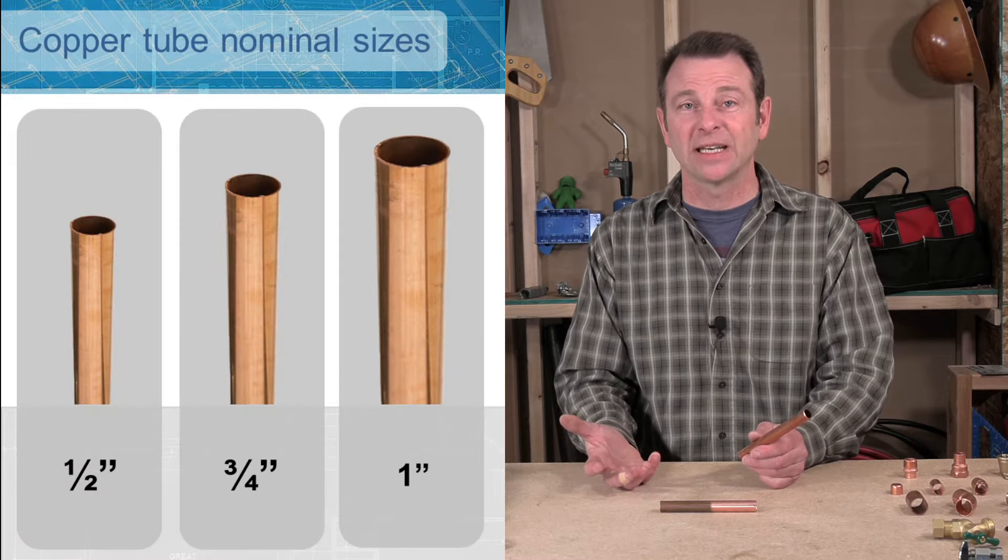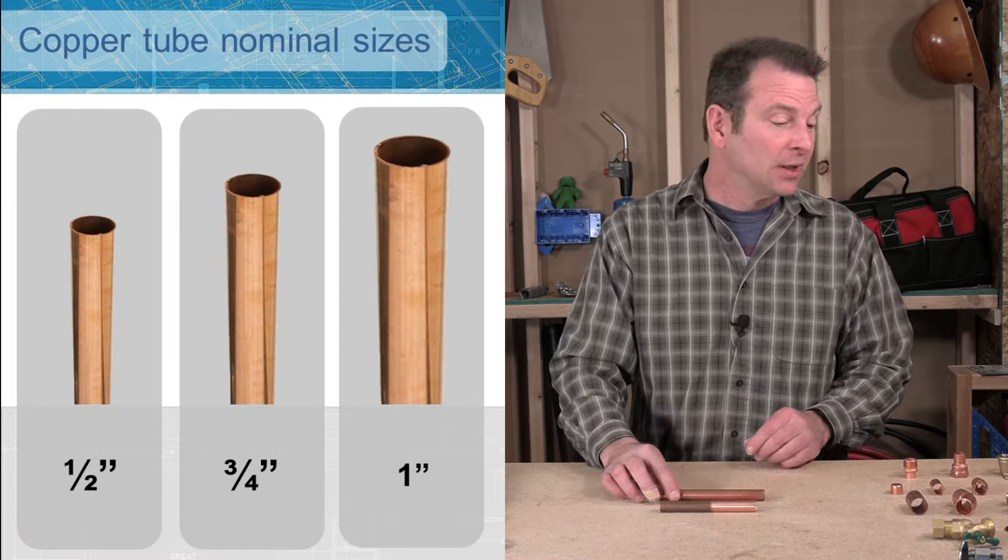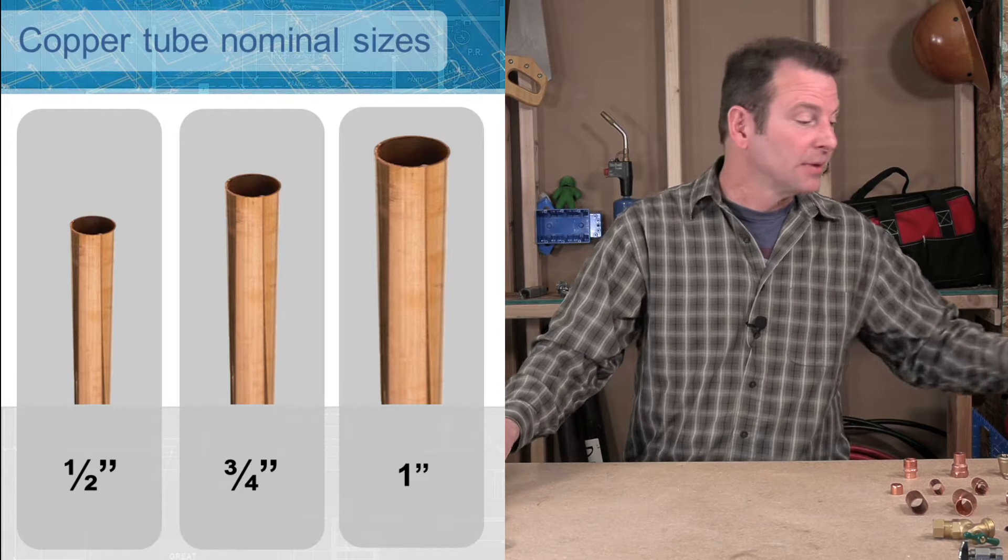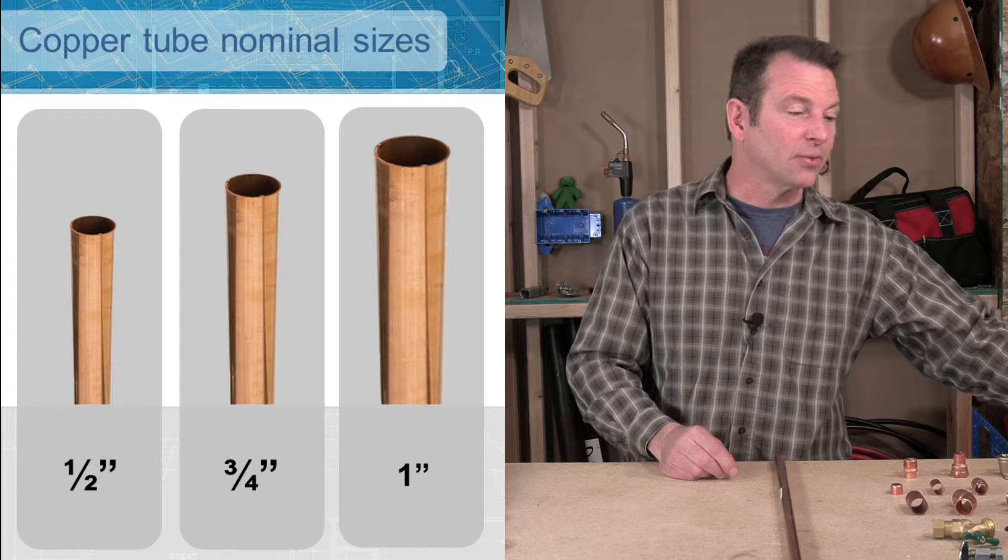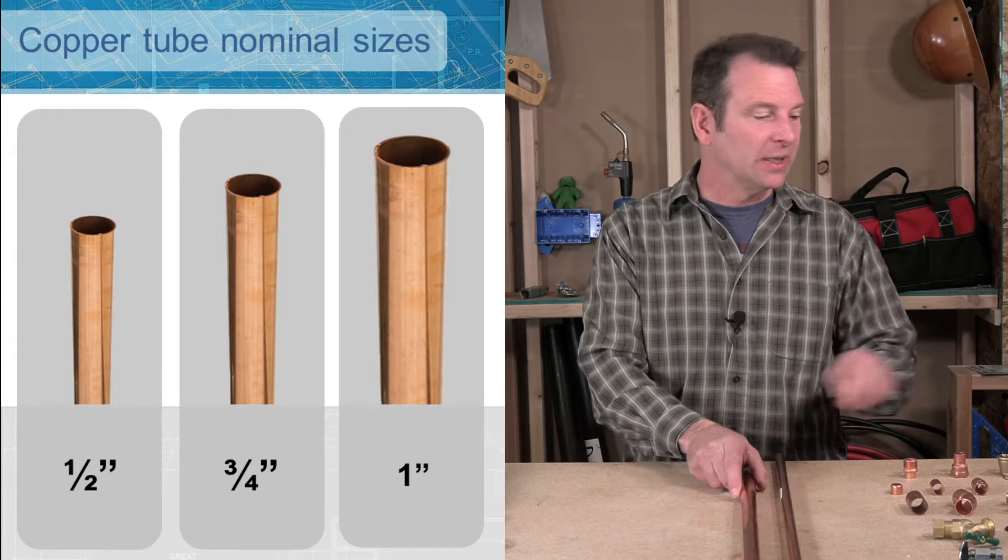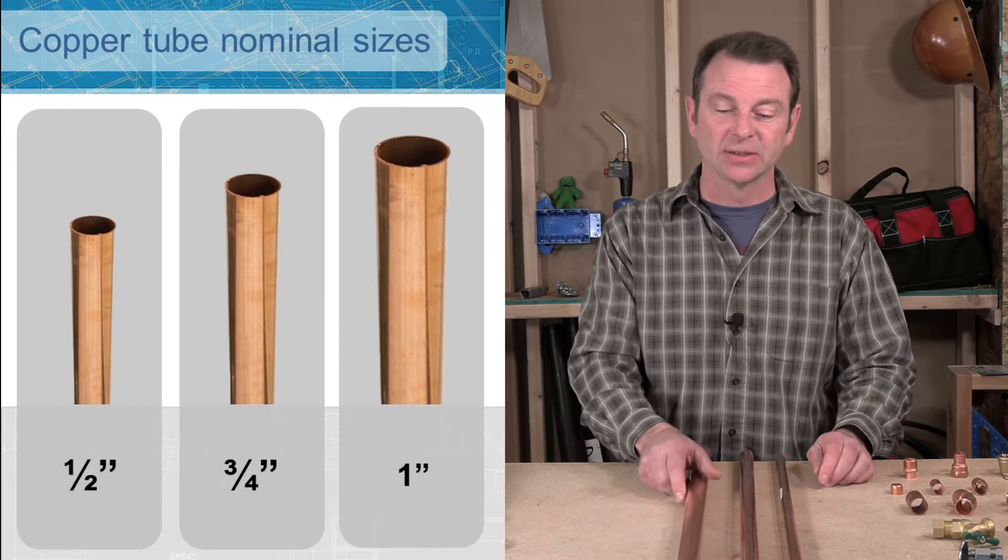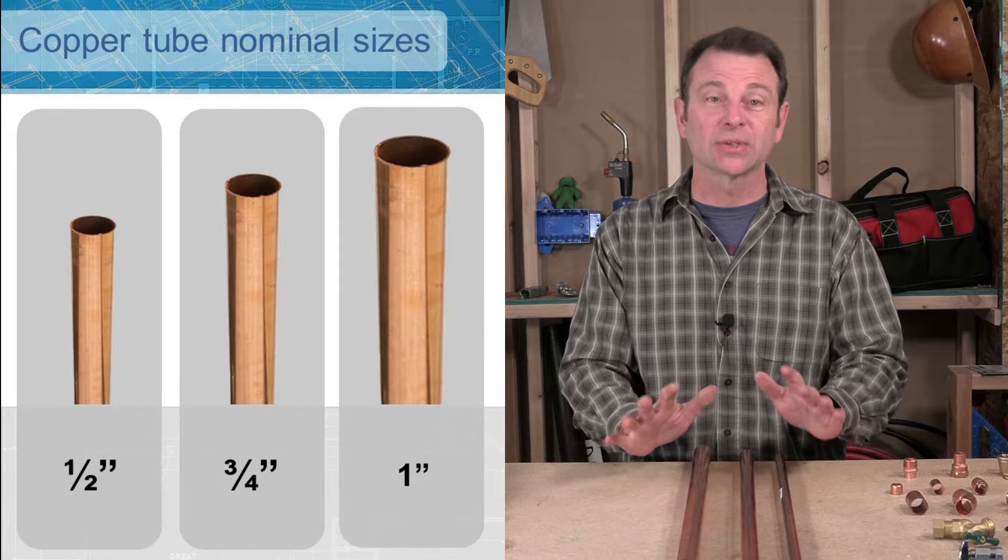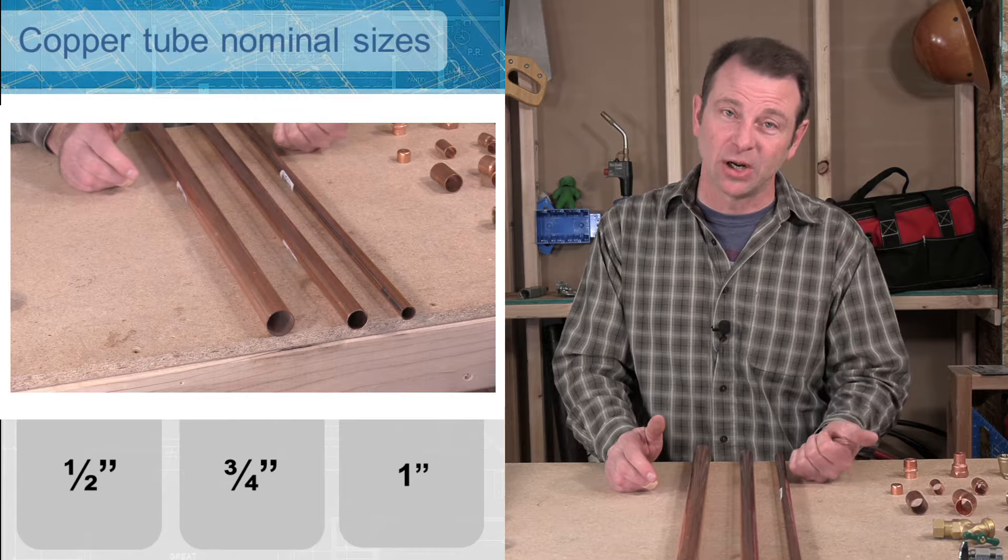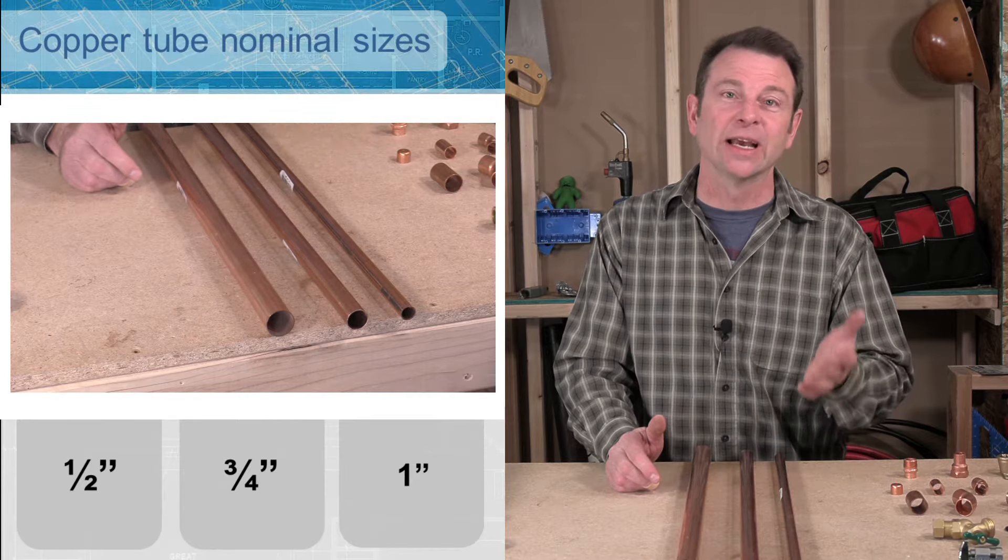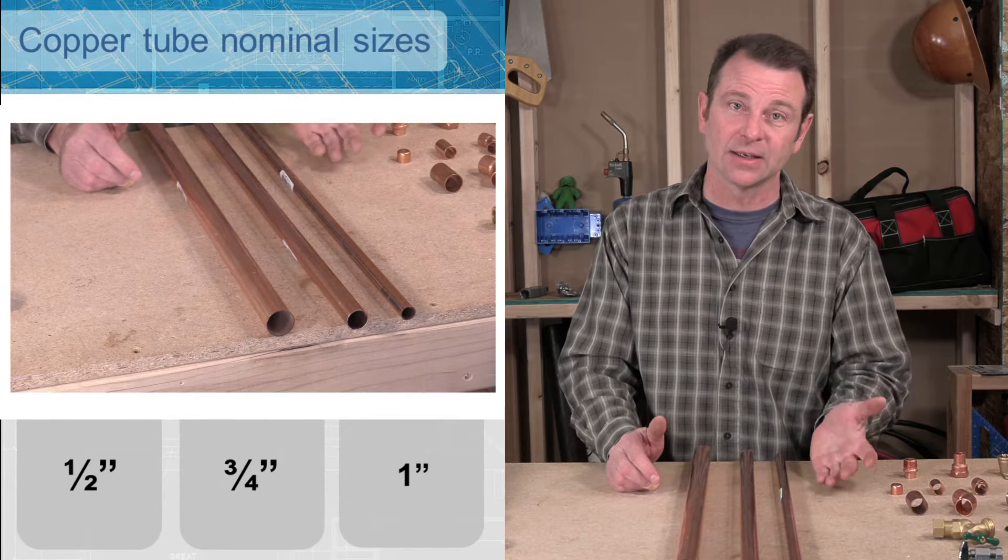So some common pipe sizes you'll see in copper are, I'll show you three. Half inch copper, I have three quarter inch copper, and I have one inch copper. Inside of a building, these are probably the most common sizes that you'll see. Of course, copper can get smaller. You can end up with a three-eighths quarter inch on this end, the smaller end.